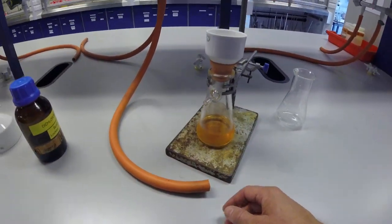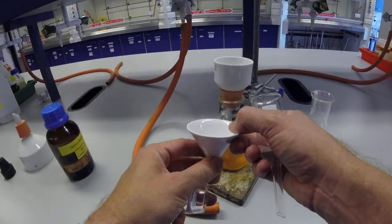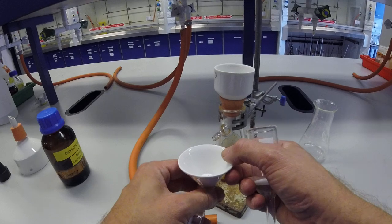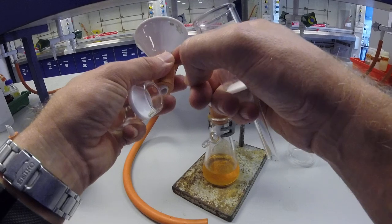Other methods when vacuum filtering could be to use, if you've got a very small amount—we had a look at a large one earlier—this is a Hirsch funnel. So sloped sides, much smaller filter disk in there if you use small amounts.